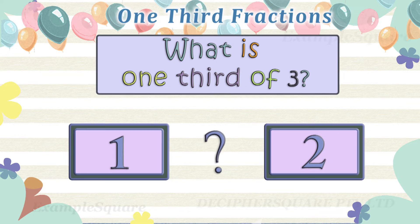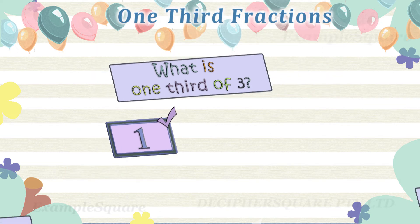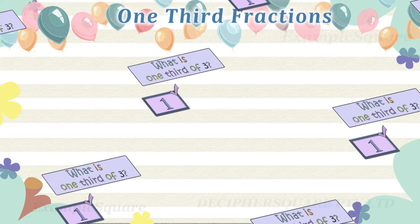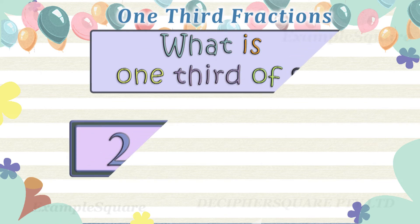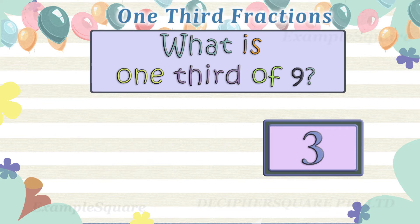What is one-third of three? One-third of three is one. What is one-third of nine? One-third of nine is three.